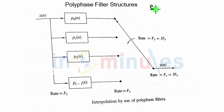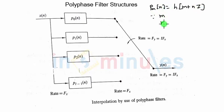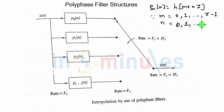This comes from the fact that P_mn was equal to h of m plus n*I. In this case, we have written the range of m as well as n. Range of m is from 0 up to I minus 1, so please remember that. And range of n was up to K minus 1. But n will decide the length of each and every filter. How many filters we will have — that will depend upon the value of I. So you go from 0 to I minus 1, which means there will be total I number of filters.